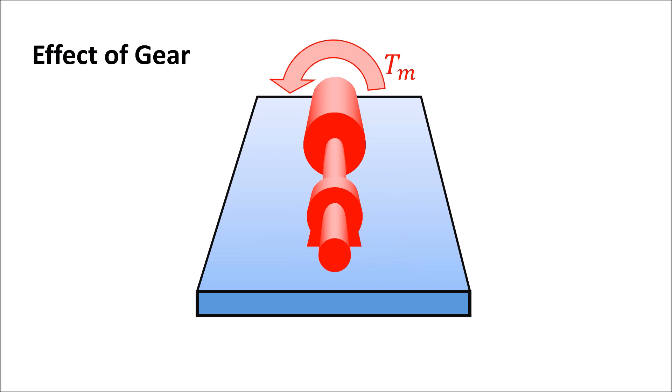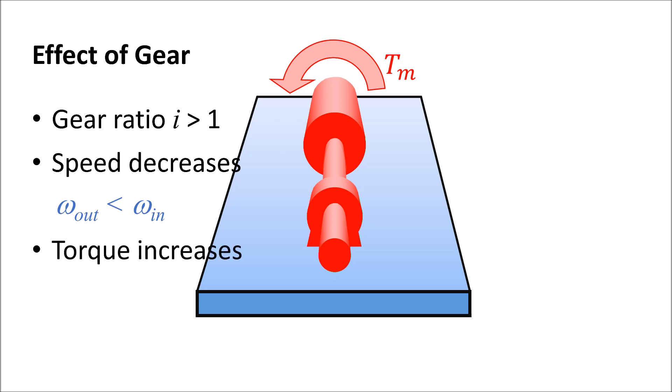Gears of the drivetrain usually have a gear ratio that is greater than 1. This means that the outgoing angular speed is downscaled while the outgoing torque is getting larger by the factor of the gear ratio.